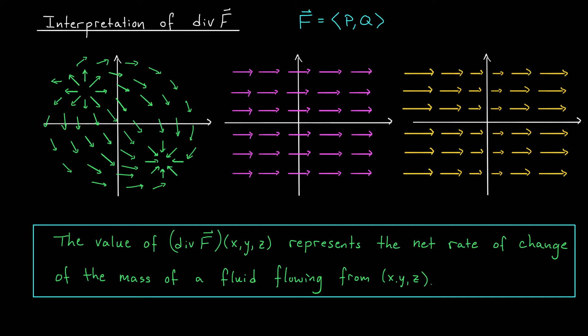At the end of the last lesson, we discussed the physical interpretation of the curl. Specifically, if you have a vector field f on R², we can think of that as modeling some type of fluid flow — maybe the vector field is telling us the velocity of water as it moves down a river or around a lake. The divergence of a vector field also has an important physical interpretation, and just like for curl, we can best understand it in terms of fluid flow. So let's pretend that each of these vector fields models the velocity of a fluid as it travels throughout a region.